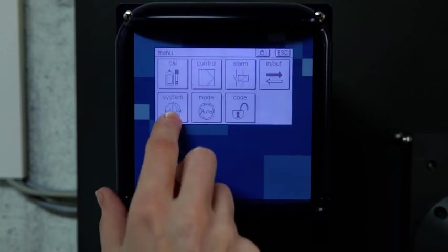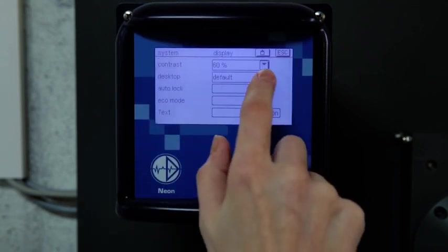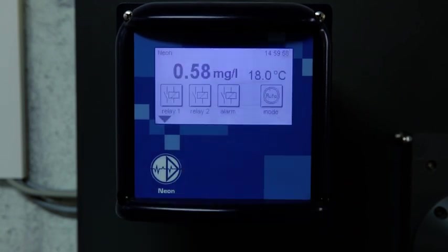You can choose different settings for the display in the menu system display. Choose relay if you use the relays as controller output. Thus you can directly see the state of the relays.